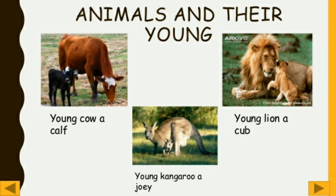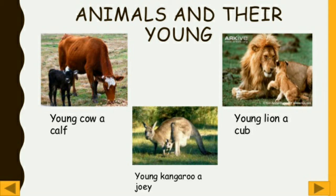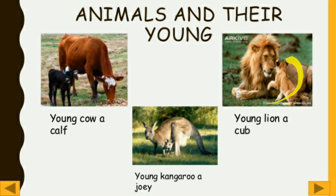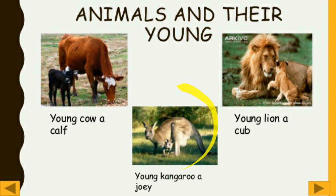A young cow is called a calf. A young lion's baby is also called a cub. A young kangaroo is called a joey. So animals and their young ones all have different names.